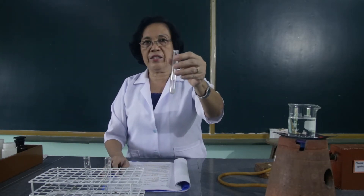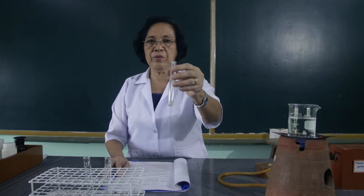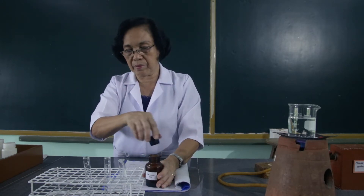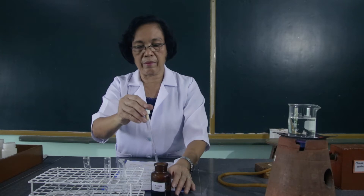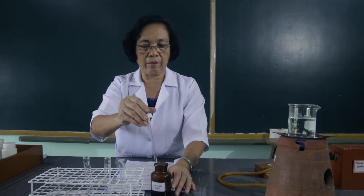Then to the first test tube, we are going to add 1 drop of the 0.1 normal acetic acid. So this is the 0.1 normal acetic acid. Just 1 drop.